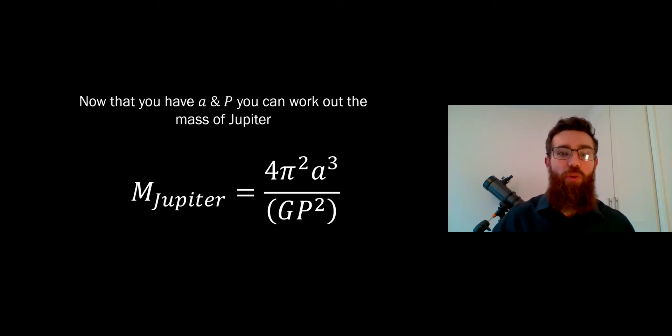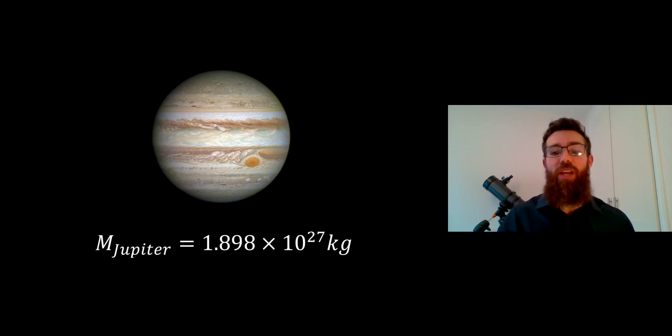If you do that for all four moons, you'll get four different values. For example, Io is quite close to Jupiter so its orbital period is quite fast. You're not going to get many data points and your plot might look quite noisy. Whereas the further out moons you'll get a much better fit. So you'll get four different values. You can then average them if you want. You can see how close you get with the different moons depending on how it looks.